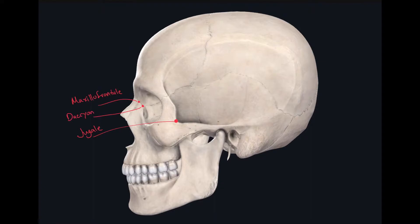The next landmark is very close to the dacrion and it's called the lacrimale. The lacrimale is located where there's an intersection between the posterior lacrimal crest and the frontolacrimal suture — so right here. And again that's called the lacrimale.